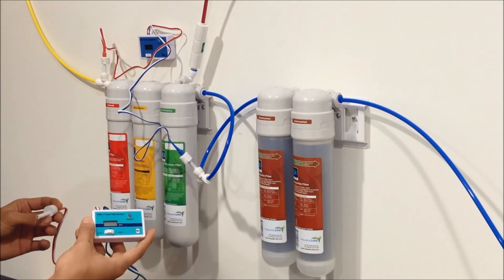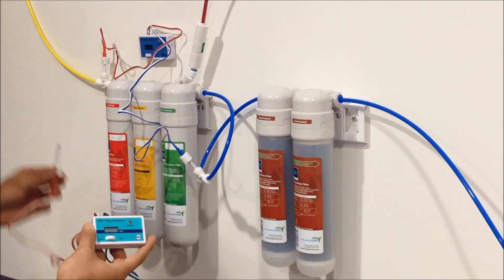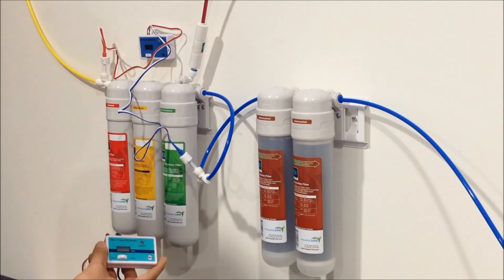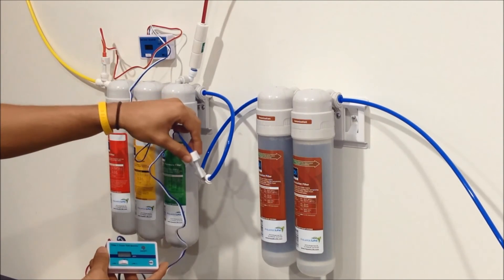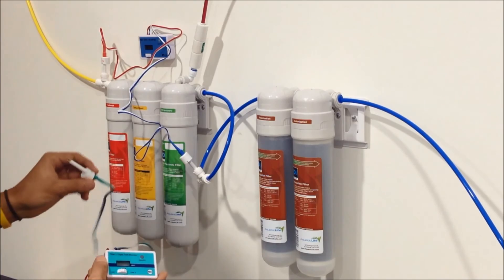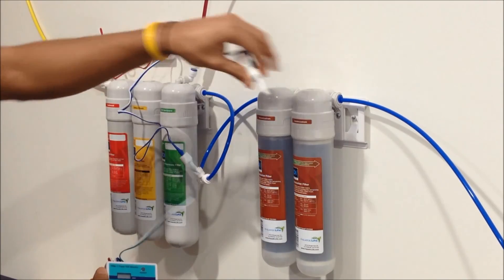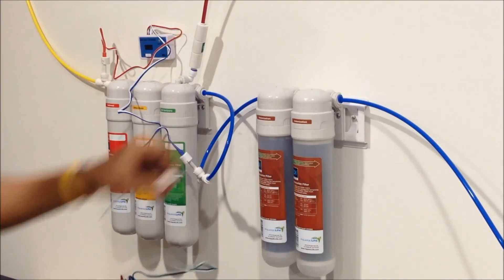If you wanted to install the triple TDS meter, you'd take the red probe and install it into the first position. You'd take the blue probe then install it into the second position. Then you'd take the third probe and your last Murloc fitting, and that would go after the DI cartridges.